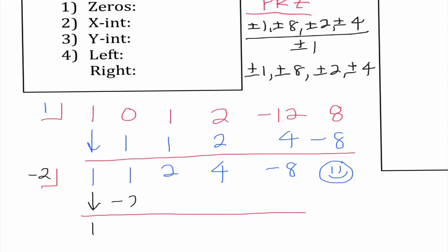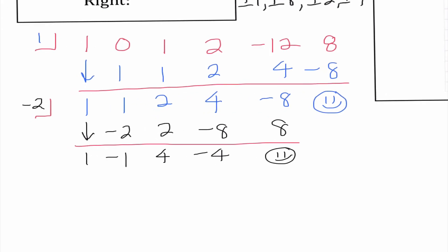1 times negative 2 is negative 2, so I get negative 1; negative 1 times negative 2 is 2, so I get 4; 4 times negative 2 is negative 8, so I get negative 4; negative 4 times negative 2 is 8 — we have another winner. At this point, we have a smaller constant. What this does is eliminate some zeros we would possibly use — 8 is no longer a factor of this constant, so there's no way I would put 8 in the box number.